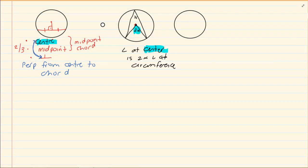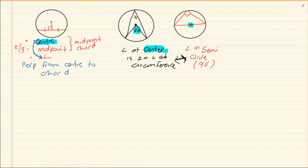The next theorem is actually a corollary of the angle at center being twice the angle at circumference. When we have a diameter — which is also related to the center — we have a semicircle, so we get angles in a semicircle, and we know we are going to get 90 degrees. Angles in the semicircle also works with the center. These two are related theorems; they work together.